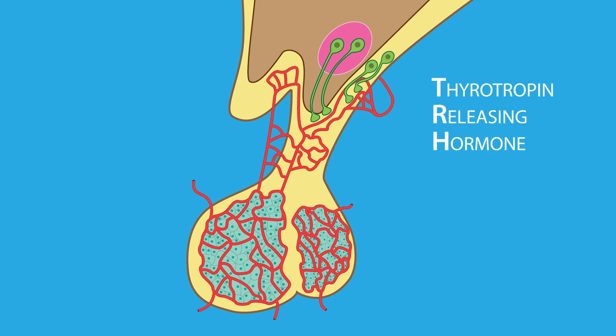Thyrotropin-releasing hormone, or TRH, which is derived from neurons located in the hypothalamus, regulates the synthesis and secretion of thyroid-stimulating hormone, or TSH, from thyrotrophs located in the anterior pituitary.